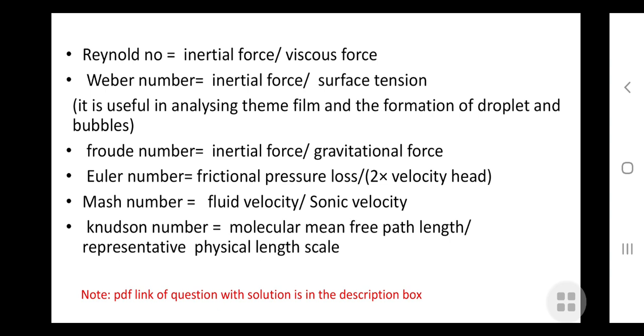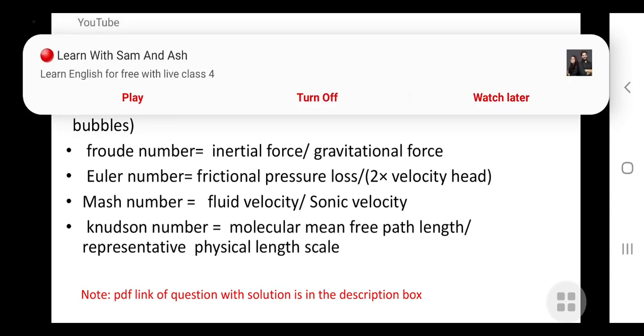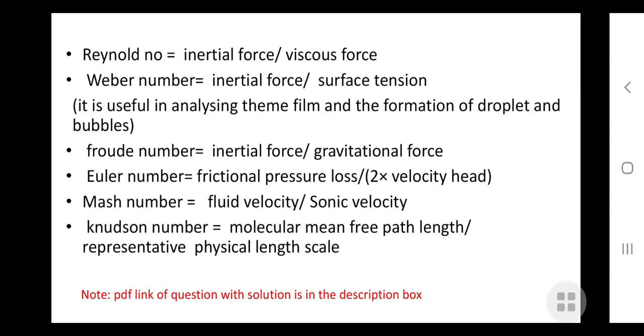Euler number is used in problems where pressure is of interest. It is the ratio of frictional pressure loss to two times the velocity head. Mach number is important for high speed flow where the velocity approaches or exceeds the local speed of sound. Its formula is the ratio of fluid velocity to sonic velocity. Lastly, Knudsen number is the ratio of molecular mean free path to representative physical length scale.